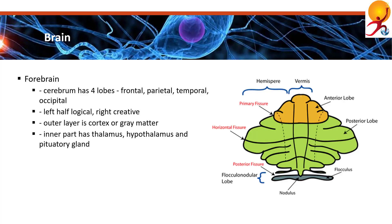In the inner part of the forebrain sit the thalamus, hypothalamus and pituitary gland. The thalamus carries messages from the sensory organs — like the eyes, ears, nose and fingers — to the cortex.